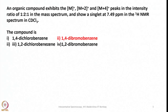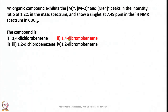Let us begin with a simple problem: an organic compound exhibits M, M+2, and M+4 cation peaks in the intensity ratio of 1:2:1 in the mass spectrum, and also shows a singlet at 7.49 ppm in the 1H NMR spectrum recorded in CDCl3. Identify the compound.